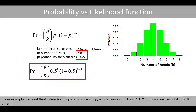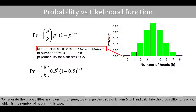In our example, we used fixed values for the parameters n and p, which were set to 8 and 0.5, meaning that we toss a fair coin eight times. To generate the probabilities shown in this figure, we change the value of k from 0 to 8 and calculate the probability for each k, which is the number of heads.